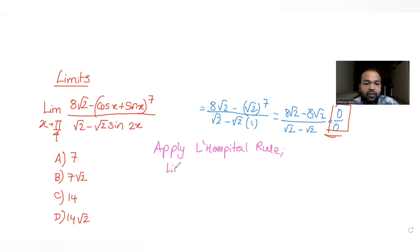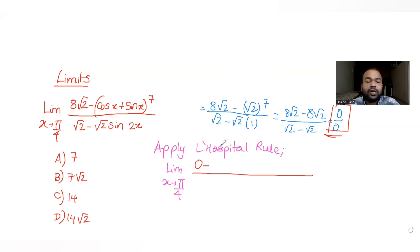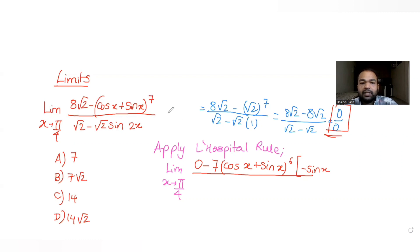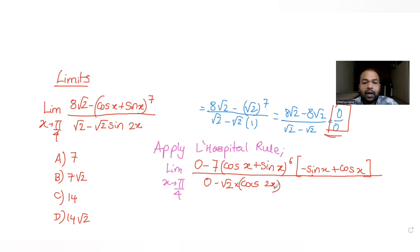Applying L'Hôpital's rule gives us the freedom to take the derivative of the numerator and denominator separately. The derivative of the numerator: the constant √2 becomes 0, and the derivative of (cos x + sin x)^7 is 7·(cos x + sin x)^6·(−sin x + cos x). For the denominator, derivative of √2 is 0, and derivative of −√2·sin 2x is −√2·cos 2x·2.